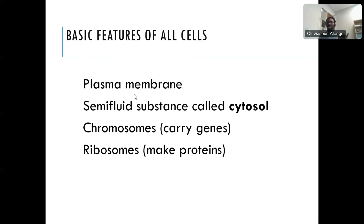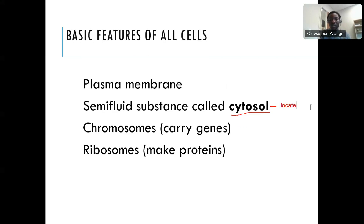Every cell has these components in common: the plasma membrane, also called the cell membrane or phospholipid bilayer — these terms are the same. Every cell has the cytoplasm, and inside the cytoplasm you have the cytosol, which is a liquid — a semi-fluid component that holds organelles in place. Then we have chromosomes, which carry genetic information, and ribosomes, which make protein. Every cell, however small, must have these features.